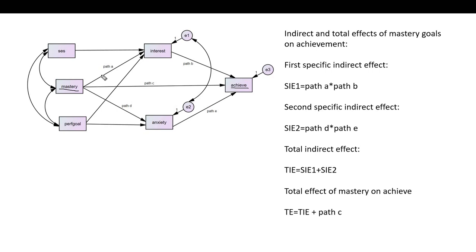All of the single-headed arrows in this diagram are considered direct effects, reflecting the effect of one variable on another. Indirect effects are those flowing through a mediating variable. When it comes to the effect of mastery on achievement, we have the effect being modeled as mediated through the interest variable. You'll notice that mastery has an arrow pointing to interest, and then interest points to achievement. I've labeled these path A and path B, and the indirect effect is the product of those two path coefficients.